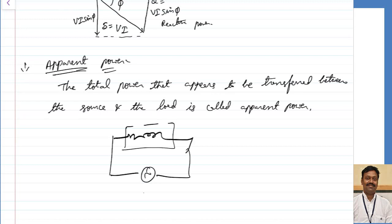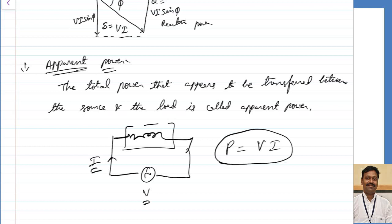Whenever you apply the voltage, the circuit takes some current. If you measure using a voltmeter and ammeter, and if asked to calculate the power, you will say it is the product V·I, because that is what you can measure. The source assumes it is supplying a power of V·I — that is why it is called apparent: it is only an apparent value. The total power that appears to be transferred between source and load is called the apparent power.